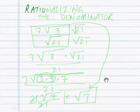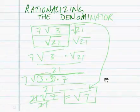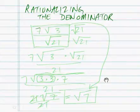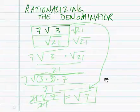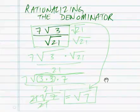Rationalizing the denominator — which means what? Well, it means when you have a problem where the denominator looks like this: 7 to the 3rd over the square root of 21. What do we do with that? We don't want the square root of 21 as the denominator. That's just considered bad form.